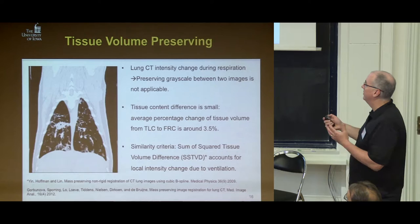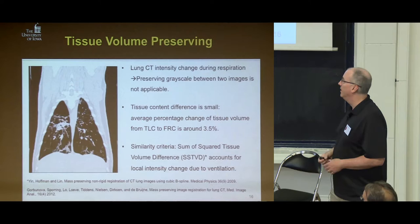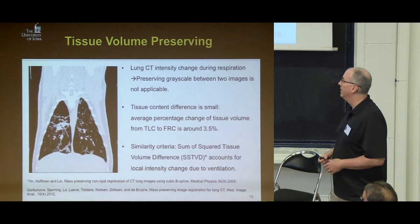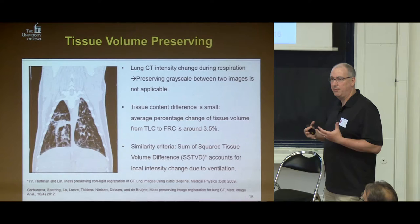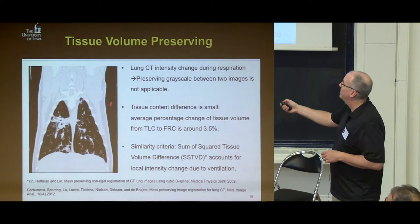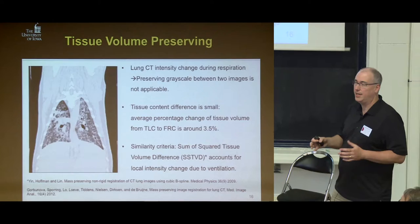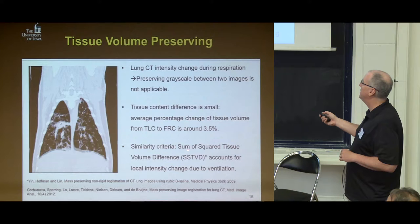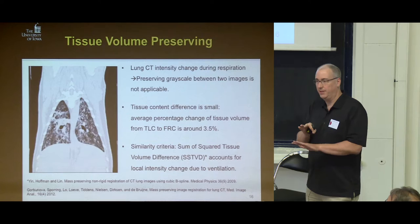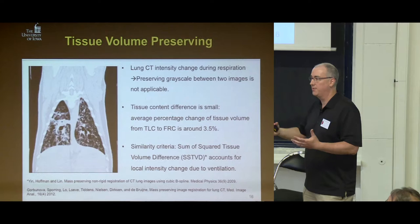Here's a picture of a sheep lung on a ventilator. The CT values inside the lungs get darker as the lung expands. What's happening is we have the same amount of tissue but the air is changing — whenever you image air, it's black. So when we try to measure correspondence between two lung images, we need to take into account this change of intensity. This similarity criterion is called the sum of squared tissue volume differences. The thing that doesn't change from inspiration to expiration is the amount of tissue — there's about a 3.5% change in tissue, so it's pretty much constant.